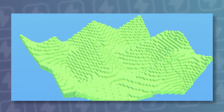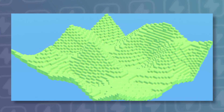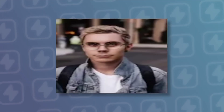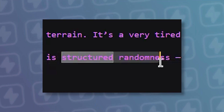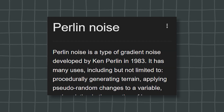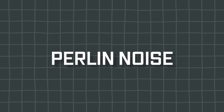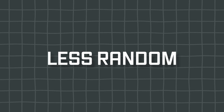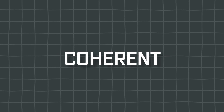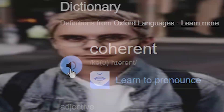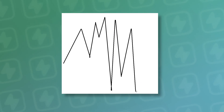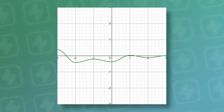What we really need is structured randomness. Invented in 1983 by Ken Perlin, Perlin noise isn't just less random — it is coherent. Instead of sharp spikes, it gives us natural-looking curves.